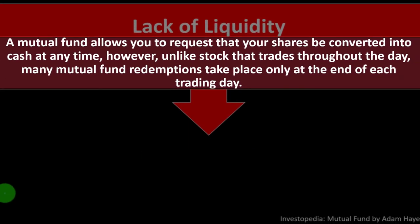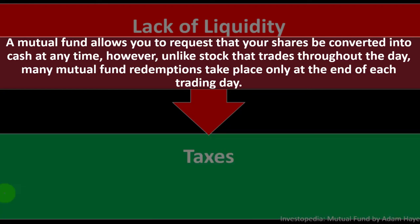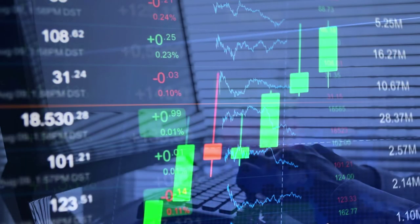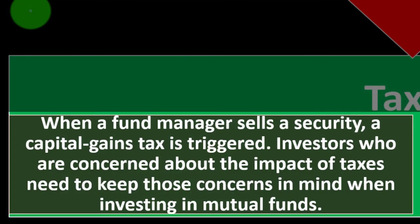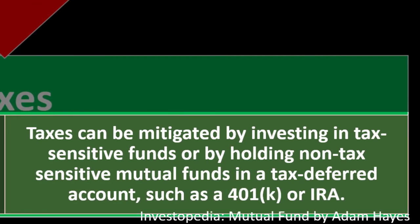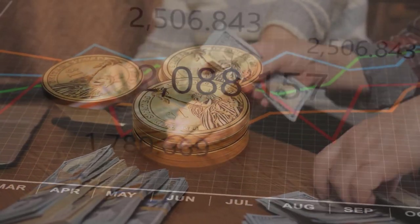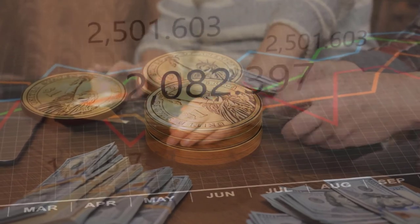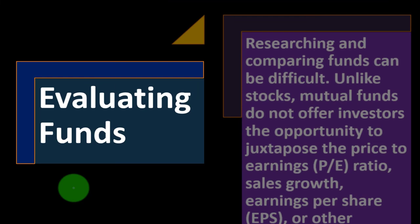A mutual fund allows you to request that your shares be converted into cash at any time. However, unlike stock that trades throughout the day, many mutual fund redemptions take place only at the end of each trading day — usually not an issue for most investors, but for active traders that lag can matter. When a fund manager sells a security, a capital gains tax is triggered. Investors concerned about the impact of taxes can mitigate this by investing in tax-sensitive funds or by holding non-tax-sensitive mutual funds in a tax-deferred account such as a 401k or IRA.